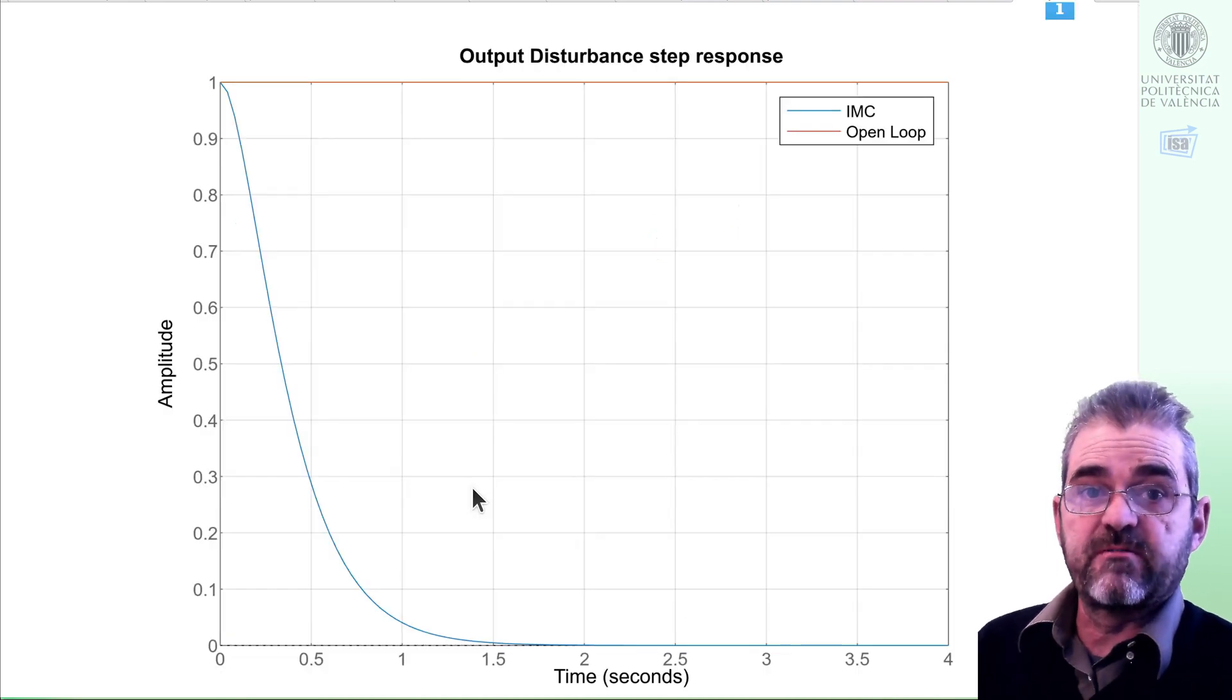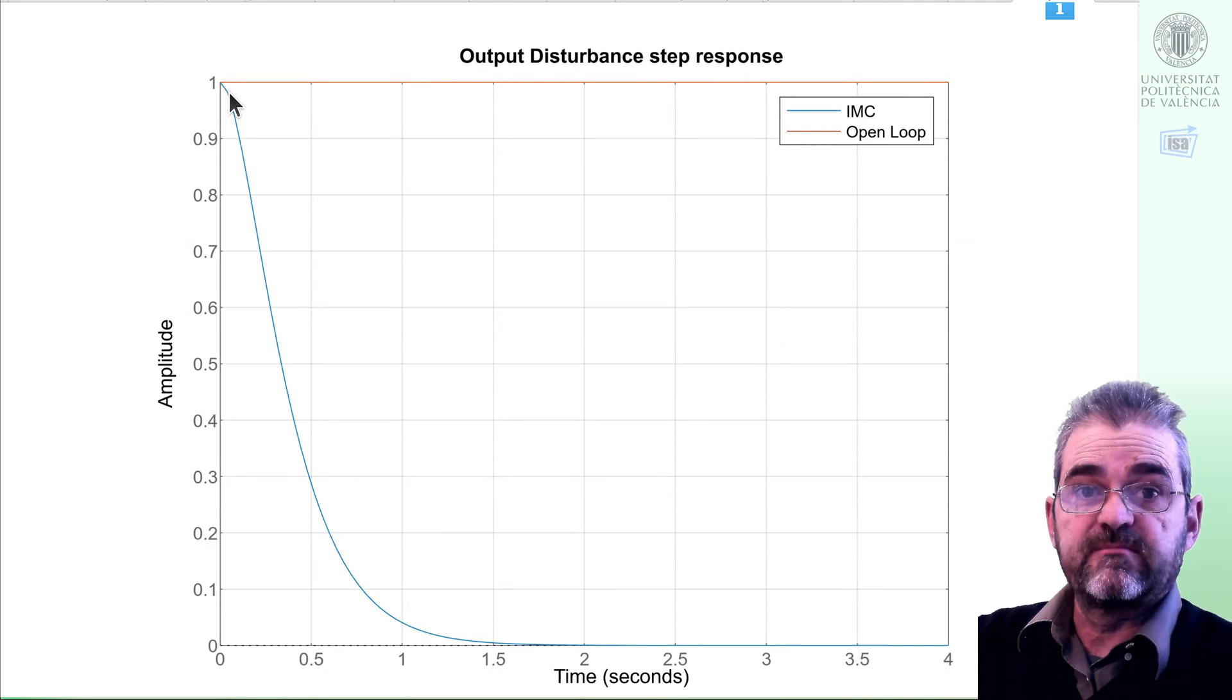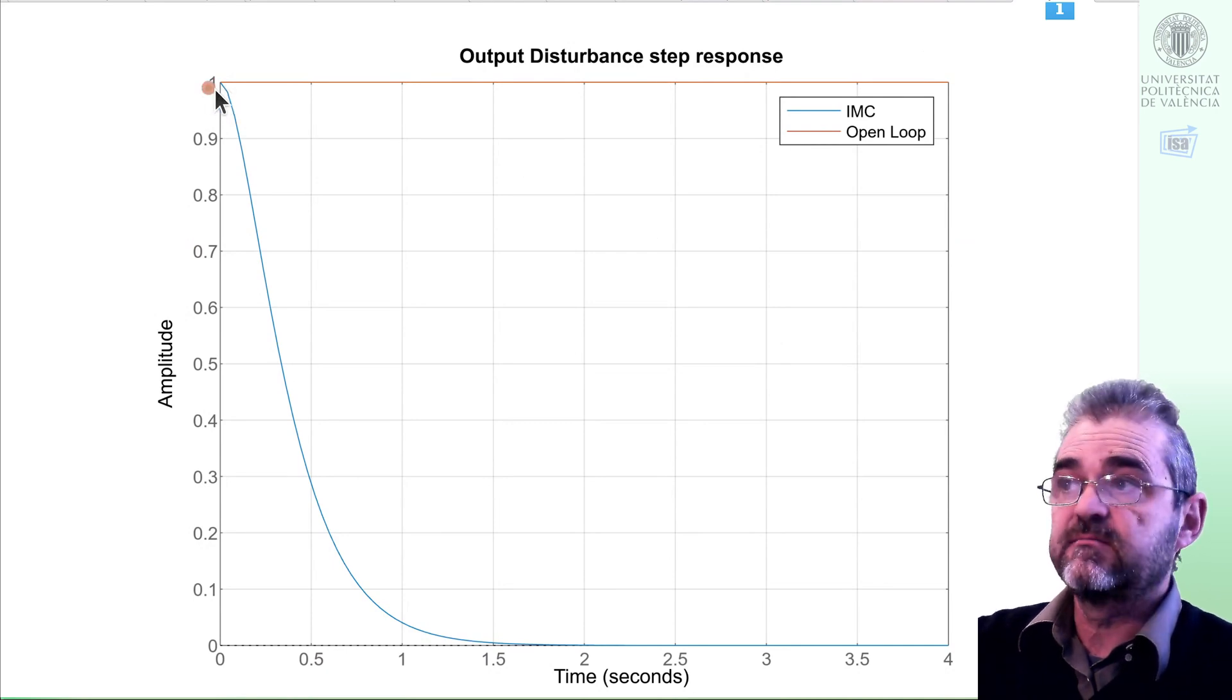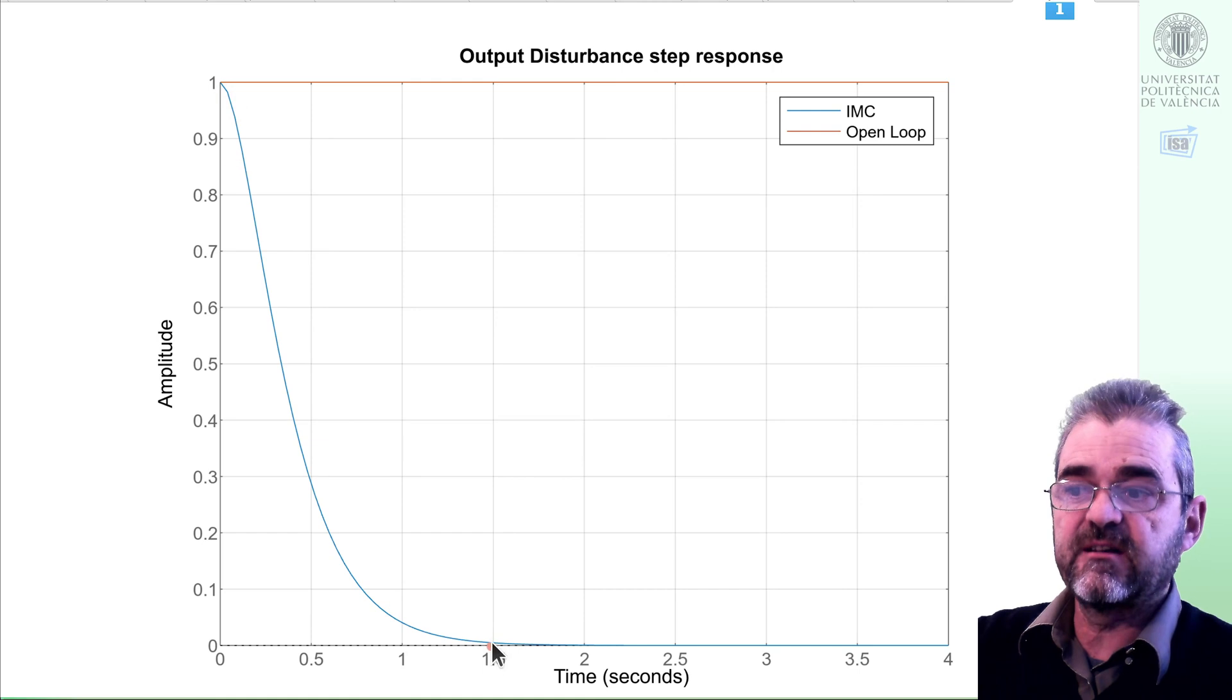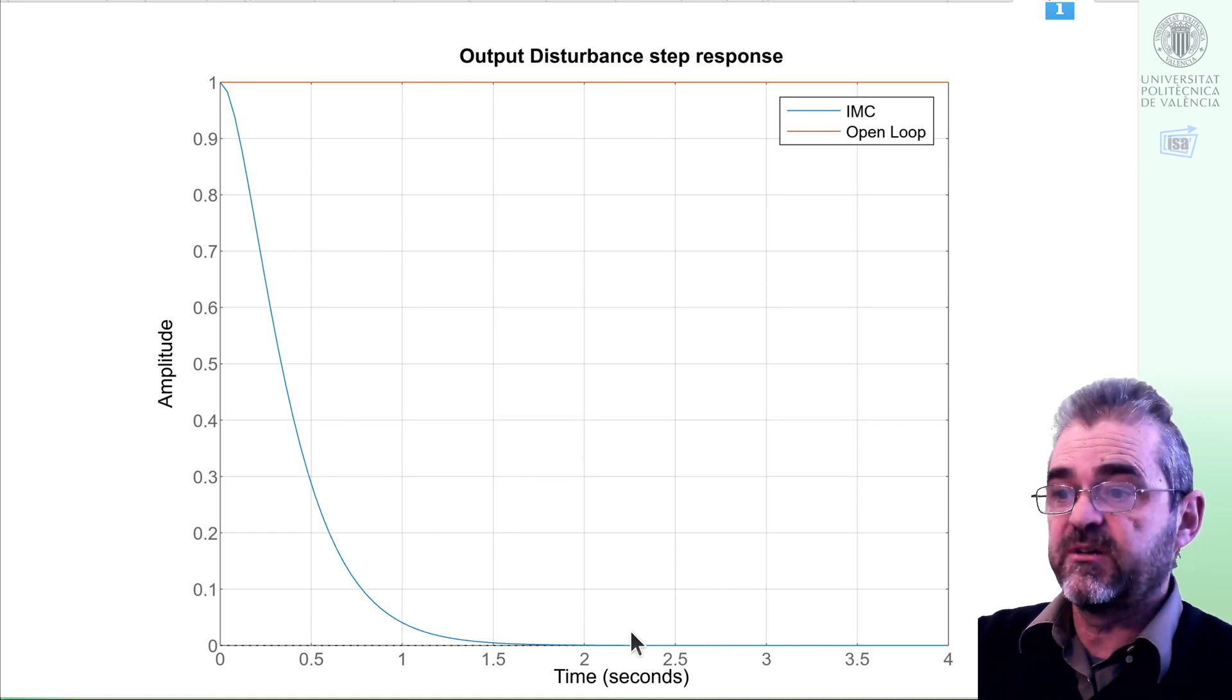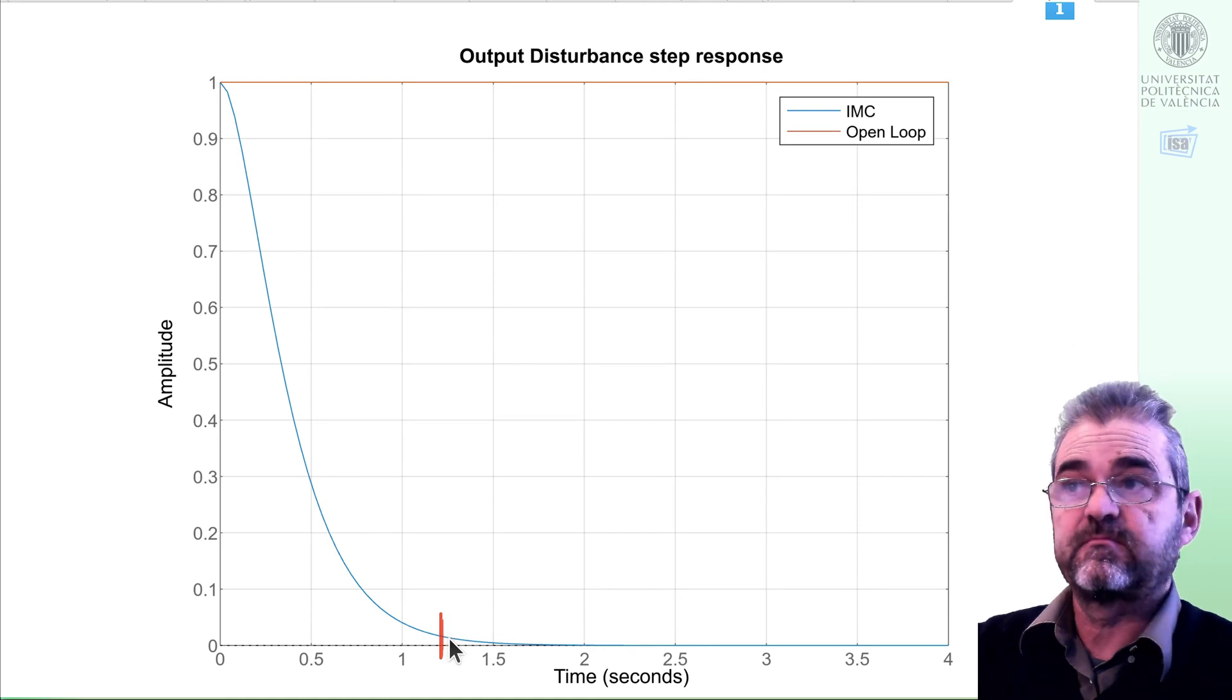The output disturbance step response: when I get the output step, of course output increases instantly to 1, but as time elapses, the integral action of the controller makes the final error go to 0 in that 1.2 settling time we were happy with.